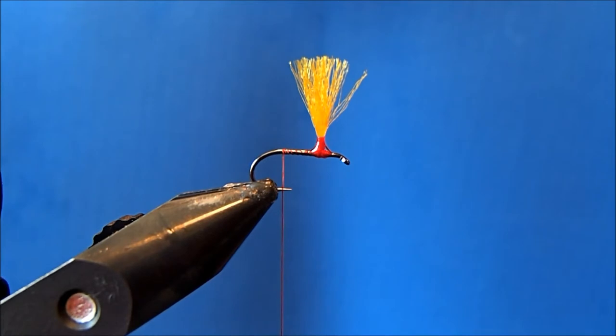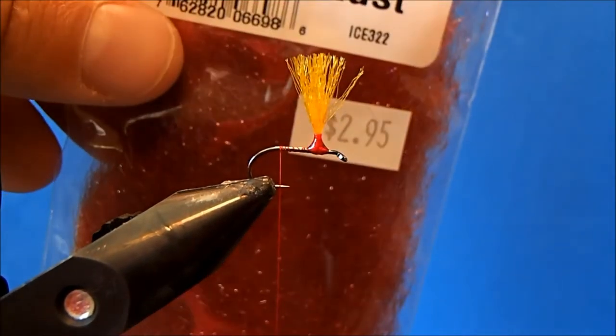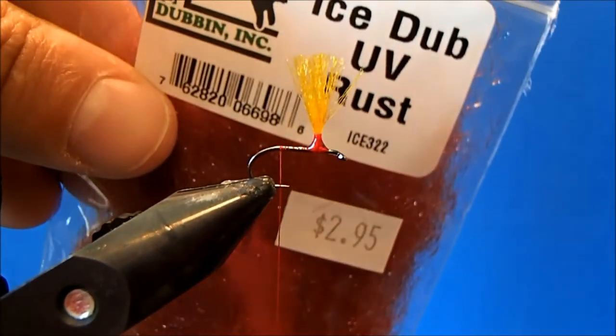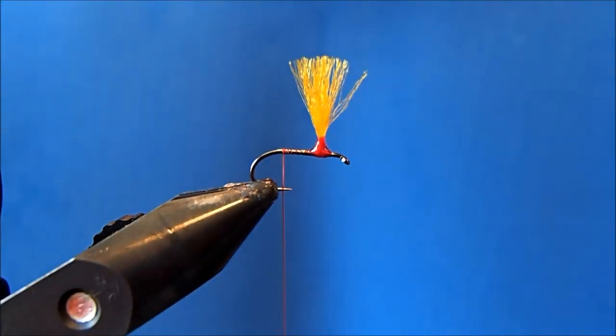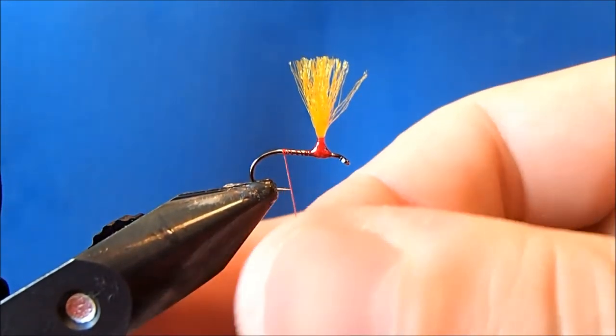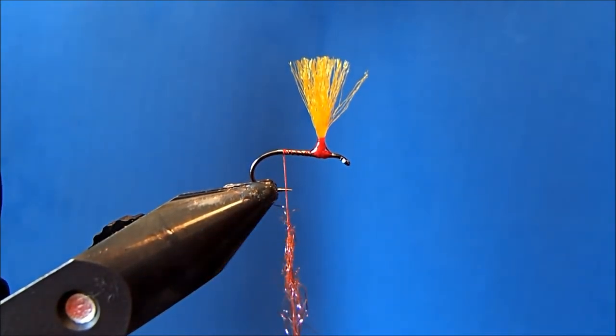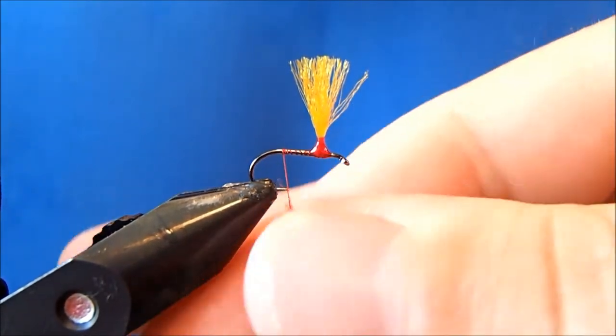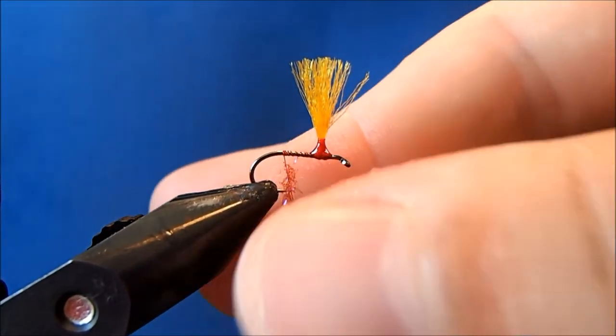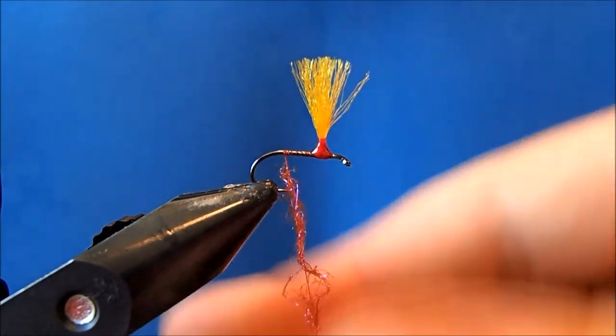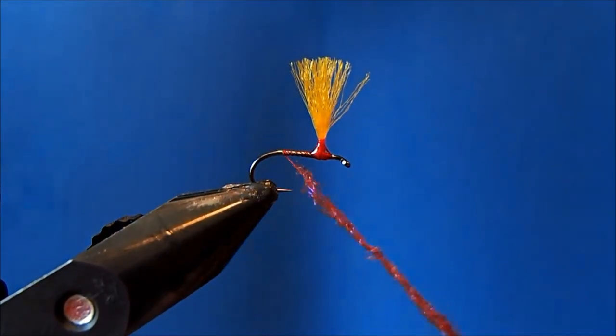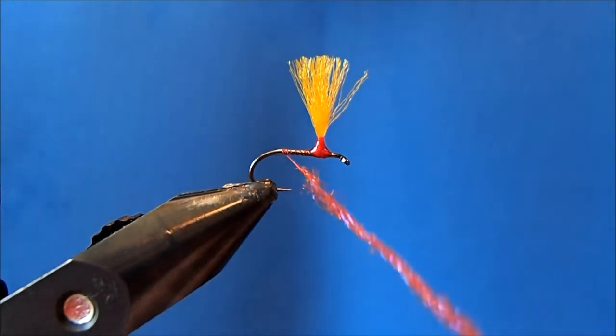I'm going to use UV ice dub, and this is going to be no different. I'm going to use the UV rust color to make this fly. I'm going to just take a pinch of this out and start to create my dubbing noodle. I want to make sure this is as tight as can be. With most dubbing materials, if you want to get a real tight dubbing noodle, if you apply some moisture to it, you can get it pretty tight.